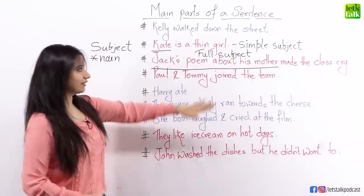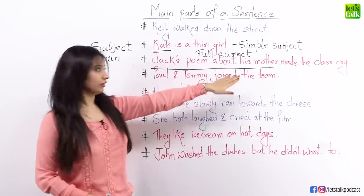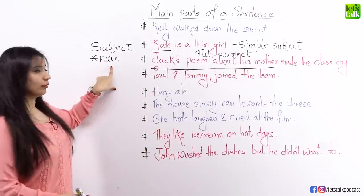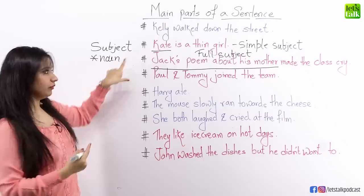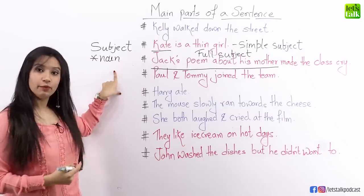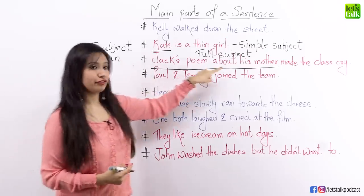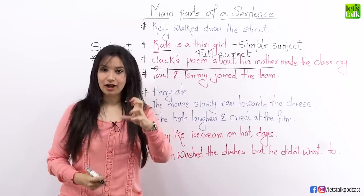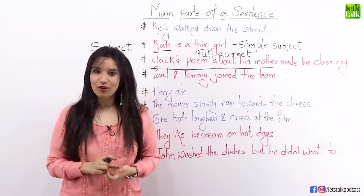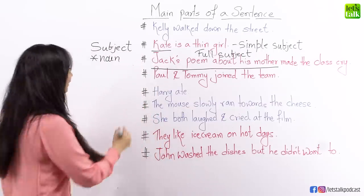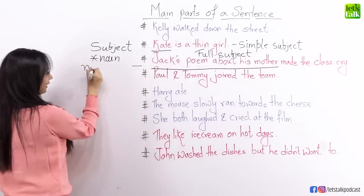Let's look at the difference between a simple subject and a full subject. A simple subject will always have just a noun — a single noun or a name. But a full subject will have a noun phrase: it not only has a noun but also added information along with the noun. So this is a noun phrase.